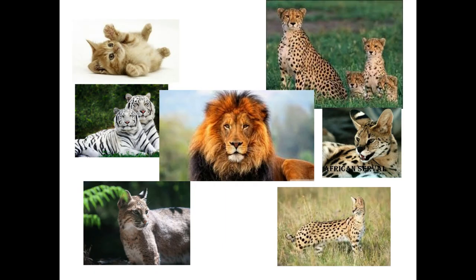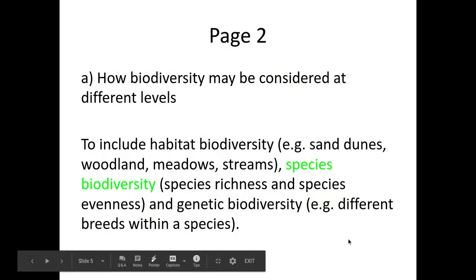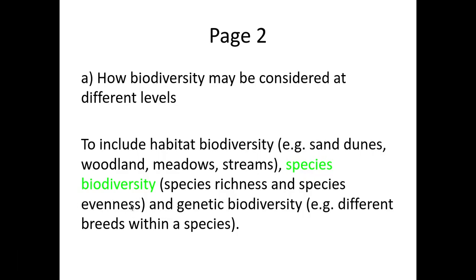Here we have a variety of different cats, and the whole biodiversity concept is getting at that — we have a variety of different species. These are all cats, different species of cats, and we've got a wide variety and a wide biodiversity of these animals. Species biodiversity is mainly measured using species evenness, which we're going to look at in more detail in specification point C.